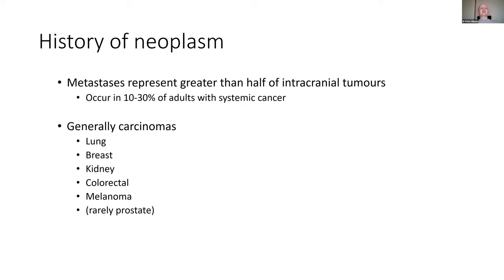Neoplasms are another one you really don't want to miss. Brain metastases in adults are the most common and represent more than half of intracranial tumours. In 10 to 30% of adults with systemic cancer, they will have brain metastases at some point — generally carcinomas from lung, breast, kidney, colorectal, and particularly in Australia, melanoma. It's not always surgical management — it generally requires a multidisciplinary team including a radiation oncologist, medical oncologist, and surgeon. Early referral and early detection is key, as that will give the patient the best chance.